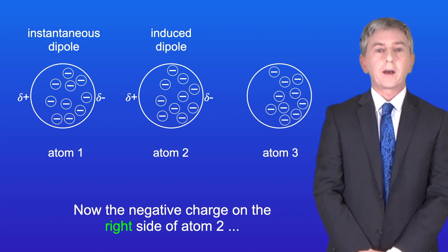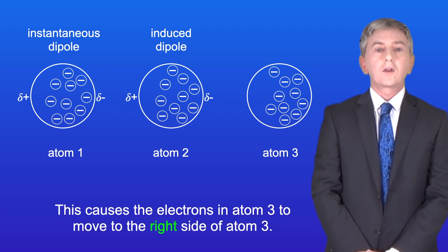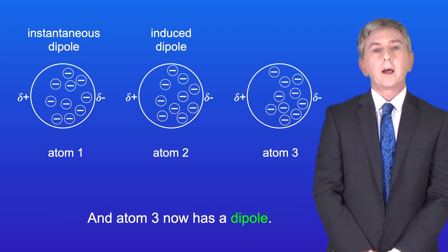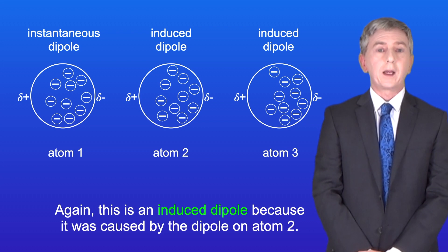Now the negative charge on the right side of atom two repels the electrons in atom three. This causes the electrons in atom three to move to the right side of atom three, and atom three now has a dipole. Again, this is an induced dipole because it was caused by the dipole in atom two.